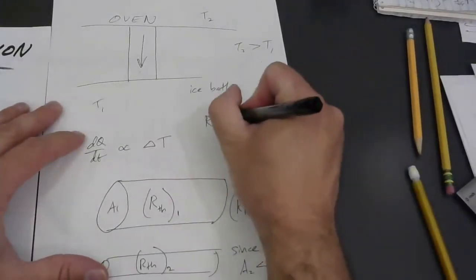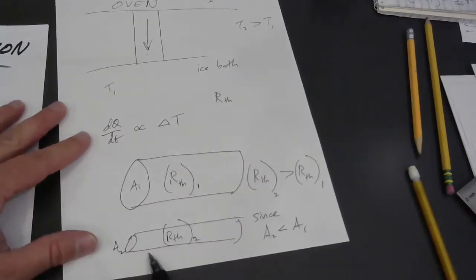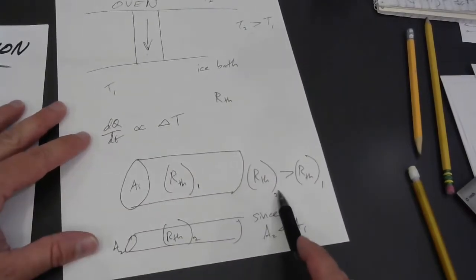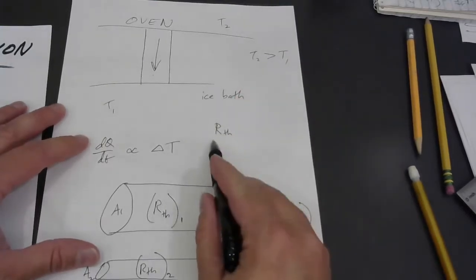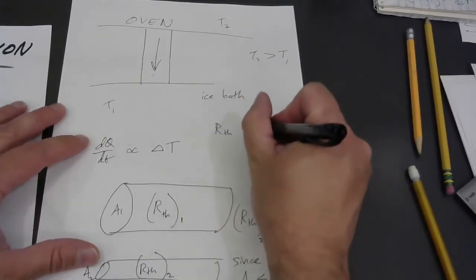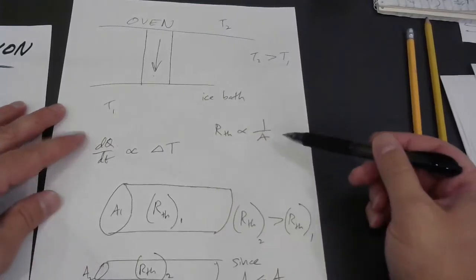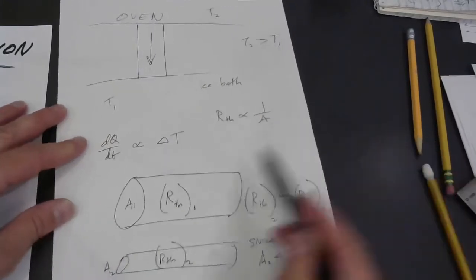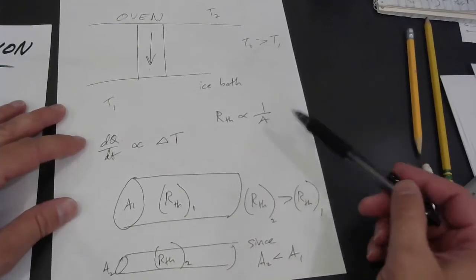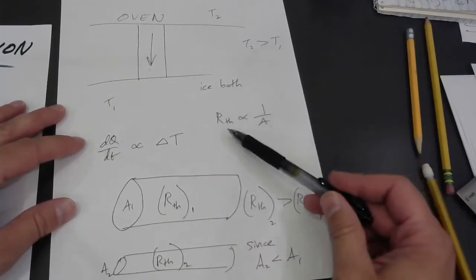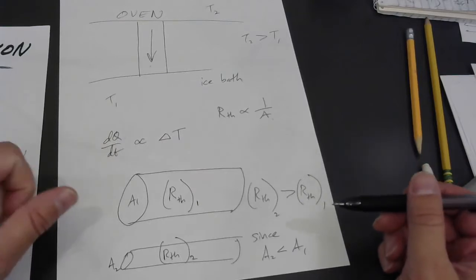Okay. So if decreasing the cross-sectional area causes the resistance to go up, then we're talking about an inverse relationship there. The thermal resistance should be proportional to the reciprocal of the cross-sectional area. The bigger that area is, the more channels you could say, the more channels there are through which heat can flow, and that would cause the resistance to go down.